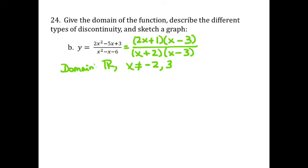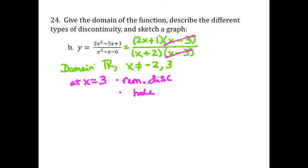We need to describe which type of discontinuity we have with each of those. Notice that the x minus 3 factor is in both the numerator and the denominator, so I'm going to cancel those out. That means at x equals 3, there is removable discontinuity because I was able to remove it from the function — that results in a hole on the graph. At x equals negative 2, that's non-removable discontinuity, which means that's going to be a vertical asymptote on the graph.